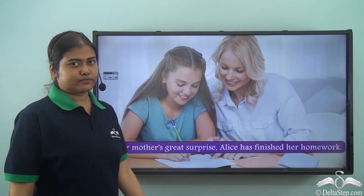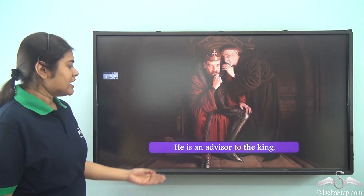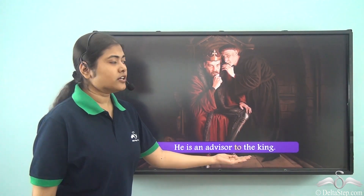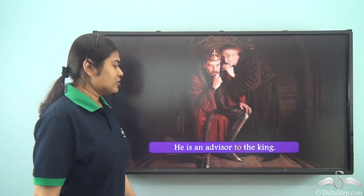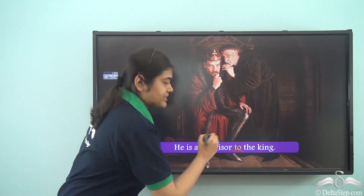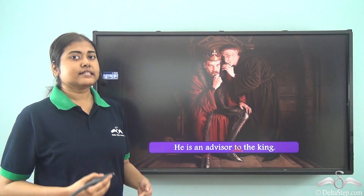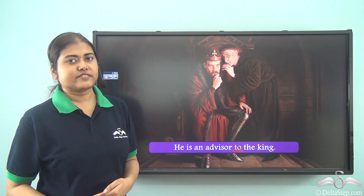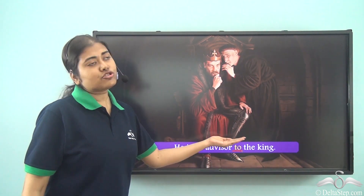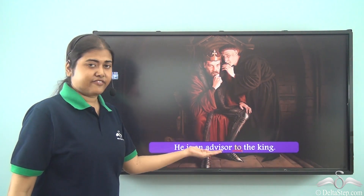He is an advisor to the king. Here 'to' is the preposition and the meaning of 'to' is to serve somebody. When I say 'an advisor to the king,' I mean that person is an advisor who is serving the king.